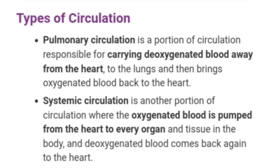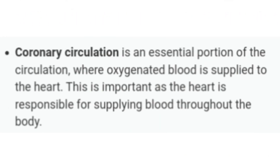Second is systemic circulation, which is the portion of circulation where oxygenated blood is pumped from the heart to every organ and tissue in the body, and deoxygenated blood comes back again to the heart. Next, coronary circulation is an essential portion of the circulation where oxygenated blood is supplied to the heart, which is important as the heart is responsible for supplying blood throughout the body.